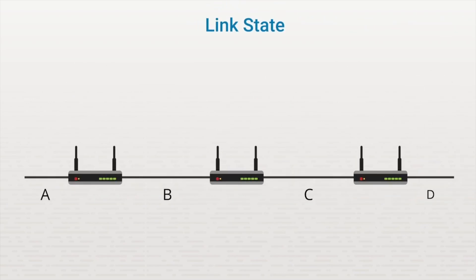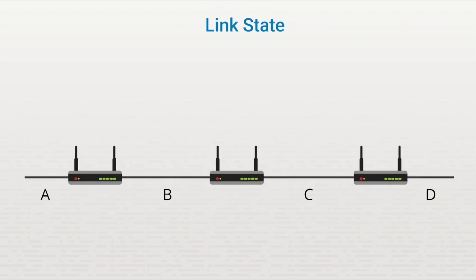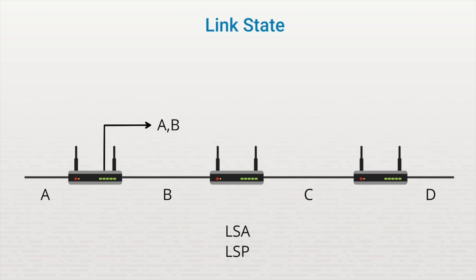Another method is called the link state method. With the link state method, routers only share information about their own directly connected networks. For instance, this router would share information about networks A and B. It uses special messages called link state advertisements, or LSAs, and link state packets, or LSPs, to share information throughout the network. When a router receives one of these advertisements, it records the information in its own routing table and then forwards that same information onto other routers within the network. The advertisement from the first router about networks A and B would go to the second router and then be forwarded to the third router without any modification.